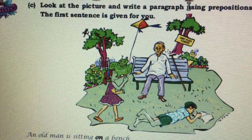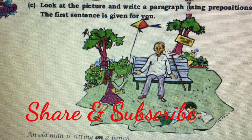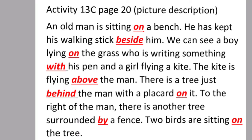Now we can write this description. An old man is sitting on the bench. He has kept his walking stick beside him. We can see a boy lying on the grass who is writing something with his pen, and a girl flying a kite. The kite is flying above the man. There is a tree just behind the man with a placard on it. To the right of the man, there is another tree surrounded by a fence. Two birds are sitting on the tree.